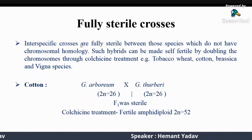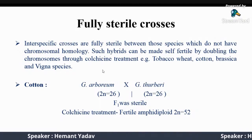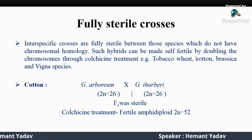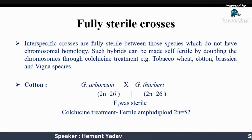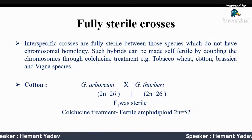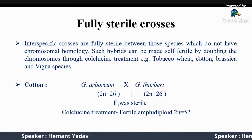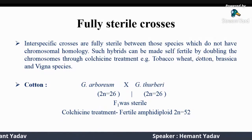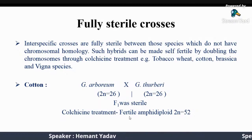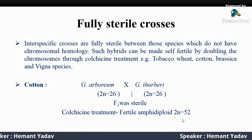Inter-specific hybrids are fully sterile between those species which do not have chromosome homology. Such hybrids can be made self-fertile by doubling the chromosomes through colchicine treatment. We can see examples of fully sterile hybrids in tobacco, wheat, cotton, Brassica, and Vigna species. In cotton, when Gossypium arboreum, which is a diploid species, is crossed with Gossypium thurberi, which is also a diploid species but with no chromosome homology, the F1 was fully sterile; after colchicine treatment, an amphidiploid is produced which is fully fertile.